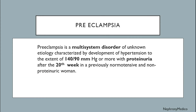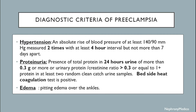Preeclampsia is a multi-system disorder of unknown etiology, characterized by development of hypertension to the extent of 140/90 mmHg or more with proteinuria after the 20th week in a previously non-hypertensive and non-proteinuric woman. Diagnostic criteria include hypertension: an absolute rise of blood pressure of at least 140/90 mmHg measured two times with at least a four-hour interval but not more than seven days apart.